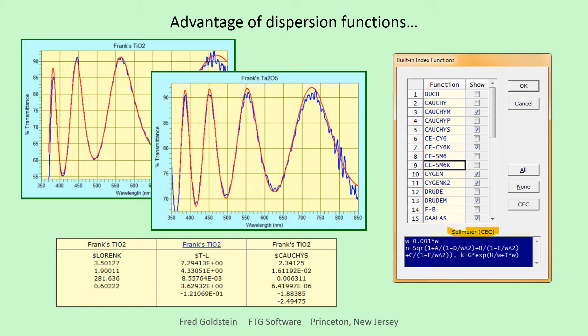As can be seen in percent T versus wavelength plots of Frank's Ta2O5 and TiO2, values calculated by reverse synthesis can fit measured spectra despite noisy data. Imagine the mess in fitting N and K point-by-point. Note that reverse synthesis is the same as optimization or refinement, but with measured spectra as targets.